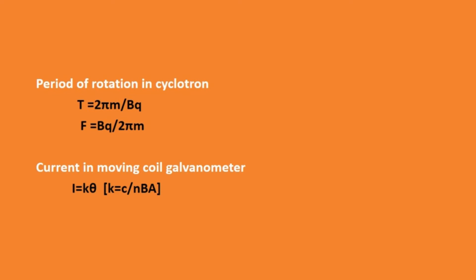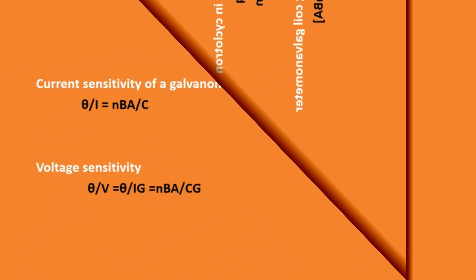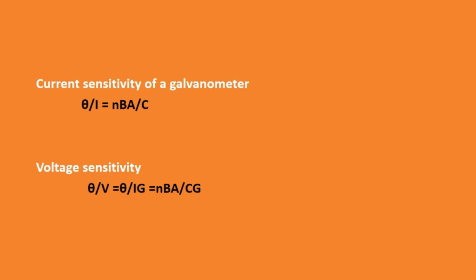Next is current in a moving coil galvanometer: I equal to K·theta, where I is proportional to theta and K is the proportionality constant with value K equal to C by N·B·A. Next is current sensitivity of a galvanometer: theta by I equal to N·B·A by C. Voltage sensitivity is theta by V equal to theta by I·G, which equals N·B·A by C·G, where G is the galvanometer resistance.